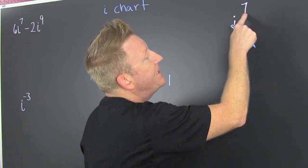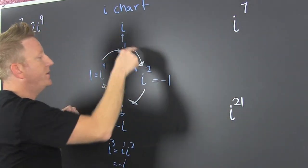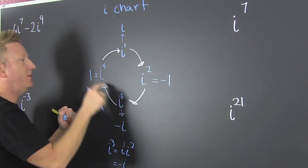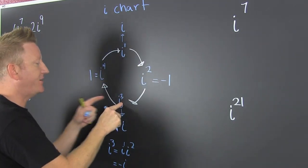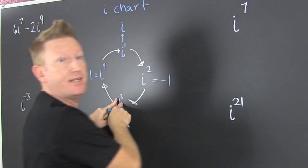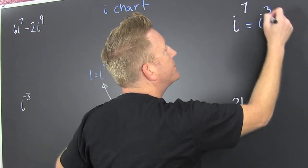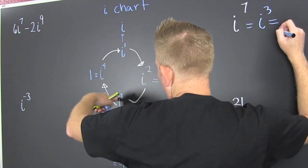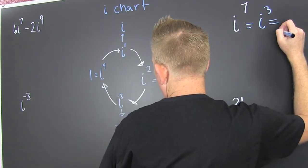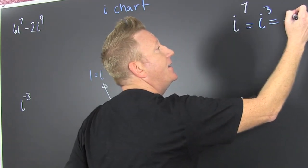So i to the seventh — counting: one, two, three, four, five, six, seven — that's i to the third power. i to the third power, which is minus i.